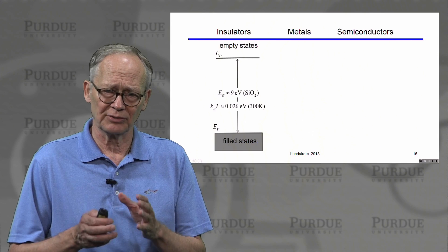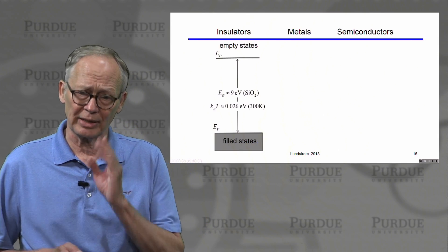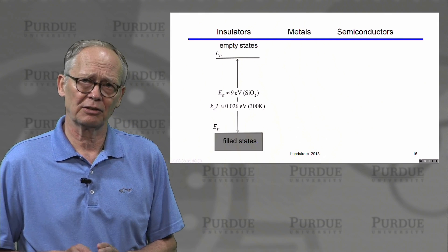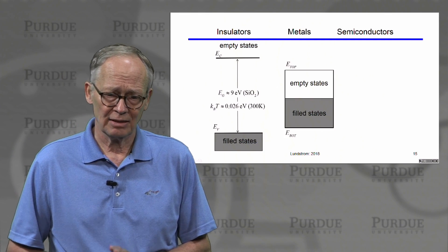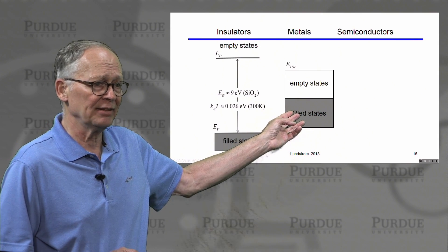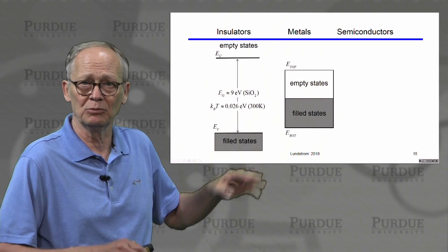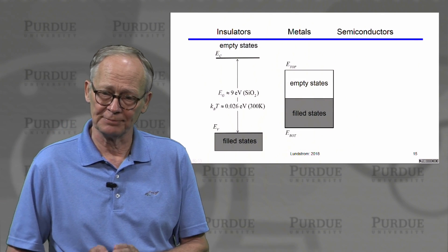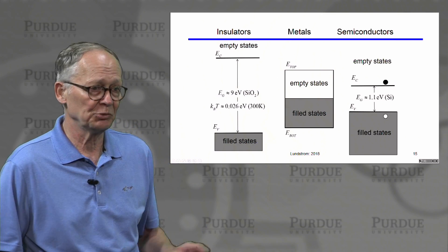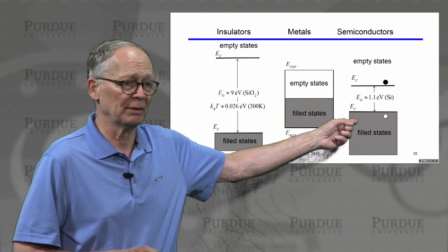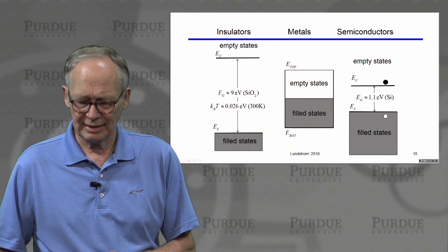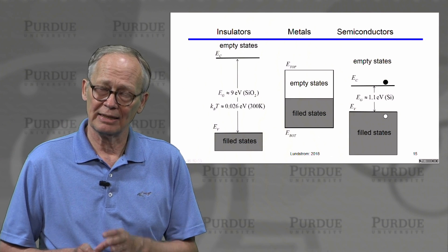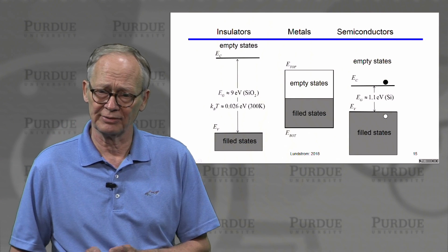The energy band picture also helps us understand what's different between insulators, metals, and semiconductors. An insulator is basically a semiconductor with a very large band gap — very hard to create intrinsic carriers. A metal has no band gap; carriers are already in the band and free to move into empty states when voltage is applied. Semiconductors have moderate band gaps. We can break a few bonds at room temperature and, most importantly, we can dope them to reproducibly alter the number of electrons and holes.